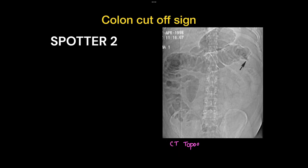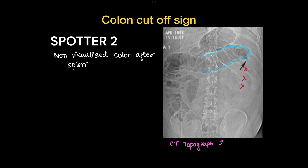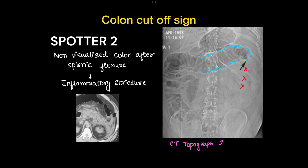This is a case of colon cutoff sign. You can see this is the transverse colon shadow, and the colon shadow is not visible on the x-ray. This is a CT topograph, which is equivalent to an x-ray. There is non-visualized colon after the splenic flexure, due to inflammation at the splenic flexure.